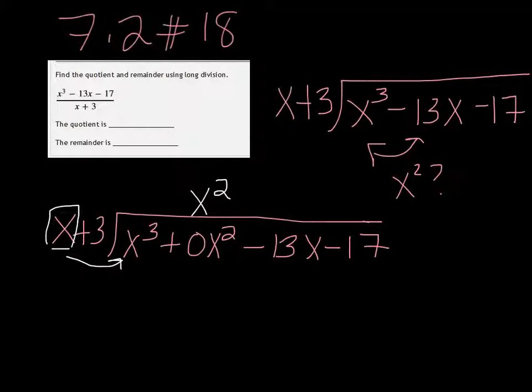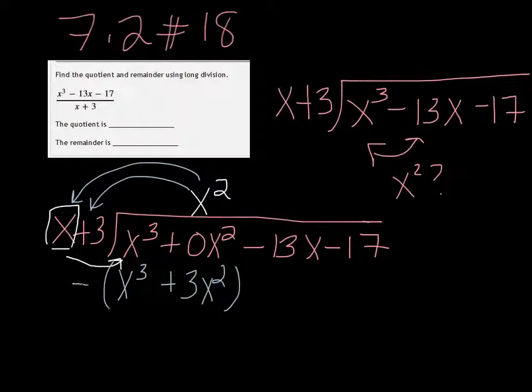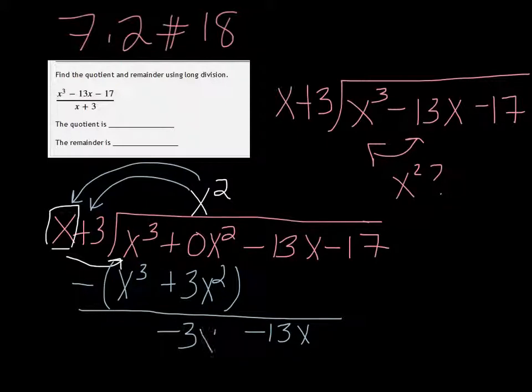And then you multiply that by both of these terms. So x squared times x is x cubed, and x squared times 3 is 3x squared. And then we're subtracting all of that from what's there. And we're going to bring down our negative 13x. So 0 minus 3 will give me negative 3x squared.